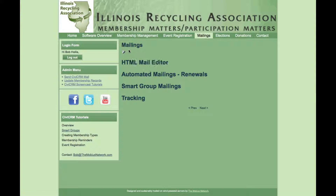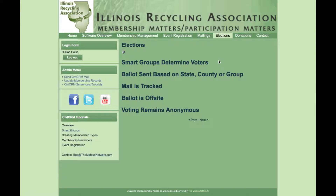For mailings, you can create an HTML mail using the mail editor. We use the default Joomla editor, which in our case is JCE. You can set up automated mailings to handle renewal reminders, and set up smart group mailings — which we'll go into in a moment when I talk about voting. CiviCRM tracks all mailings that go out to any member.